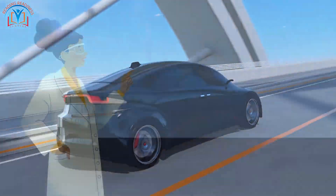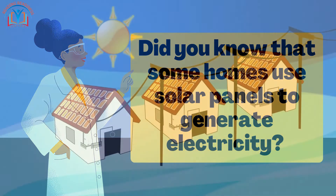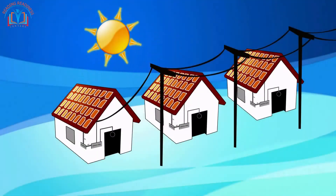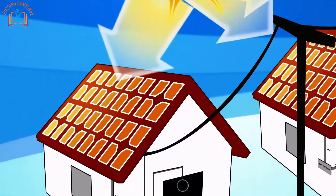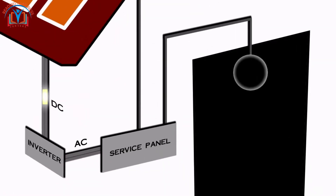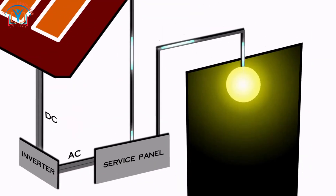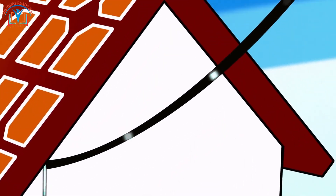Did you know that some homes use solar panels to generate electricity? These panels convert sunlight into electricity, which is then stored in batteries or fed back into the grid. It's a great way to reduce our reliance on fossil fuels and help the environment.